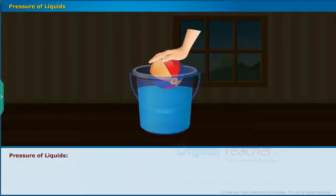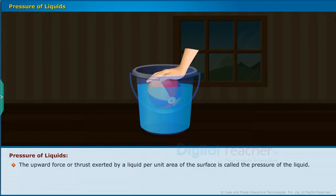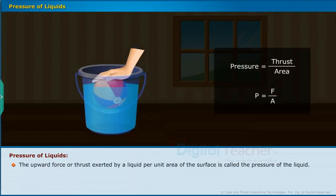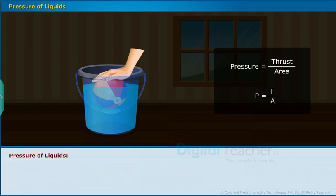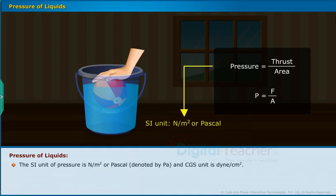Pressure of liquids: the upward force or thrust exerted by a liquid per unit area of the surface is called the pressure of the liquid. If an upward force F acts on surface area A in contact with a liquid, the pressure exerted by the liquid is the ratio of the upward force to the area of contact. The SI unit of pressure is Newton per meter square or Pascal (Pa), and the CGS unit is dyne per centimeter square. Pressure is a scalar quantity.